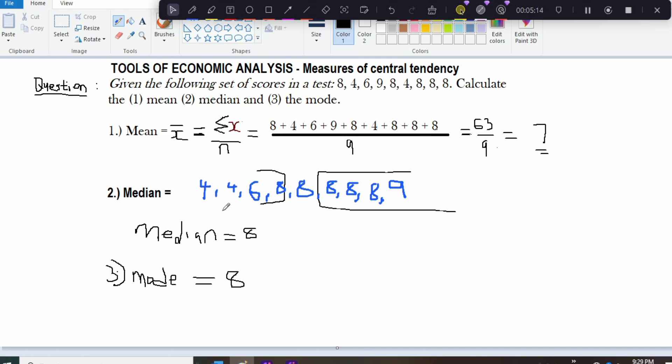So we have answered the 3 questions: the mean, the median and the mode. They are actually measures of central tendency. That is tools of economic analysis. So we can use them to find averages. For instance, the mean is generally referred to as average. So the average score in this test is 7.